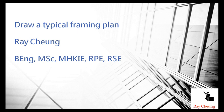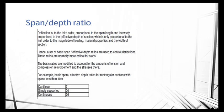Hello, today I will show you how to draw a typical framing plan. First of all, you need to understand there's a common formula. It's a very simple one and you can use it in just a few seconds to estimate the size of the beams. For example, for the cantilever, you just divide the span by 7. You can estimate the size; simply supported is divided by 20, and continuous beam divided by 26.